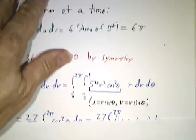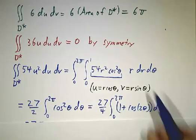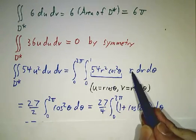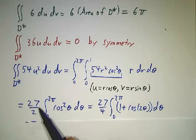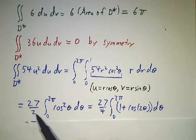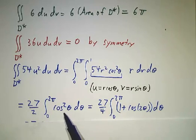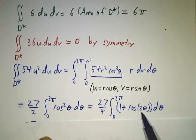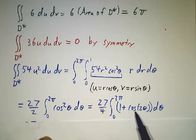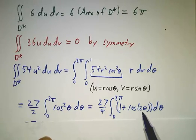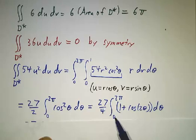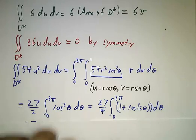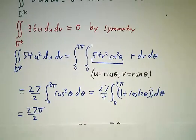And now we do our integral. Integrating with respect to r is easy. Integral of r cubed from 0 to 1 is 1/4. So we get 27 halves. And then to do the integral of cos squared, we use a trig identity. Cos squared is 1/2 of 1 plus cos 2 theta. Integral of cos 2 theta is 0. Integral of 1 from 0 to 2 pi is 2 pi. So we get 27 pi over 2.